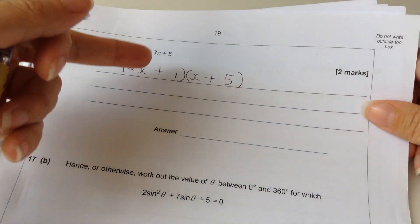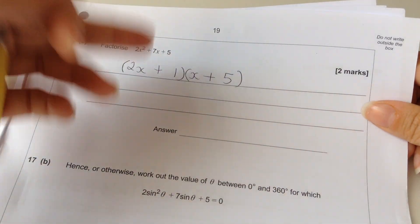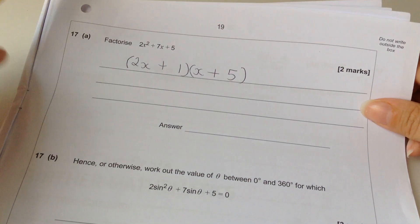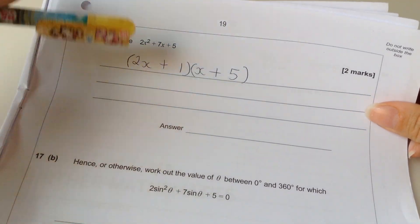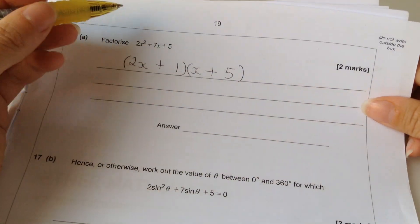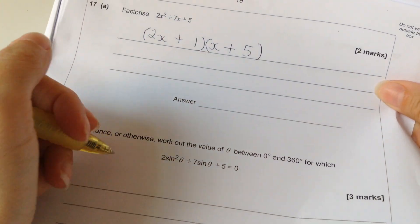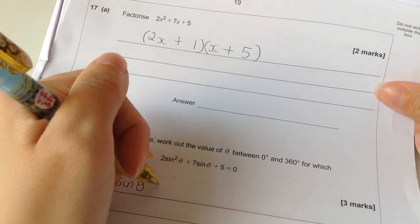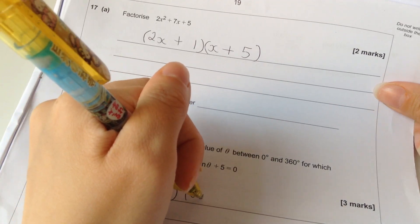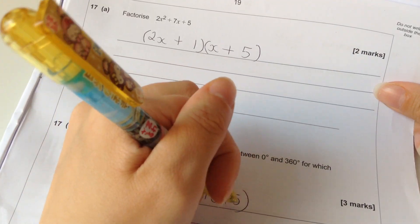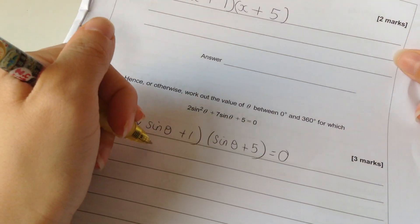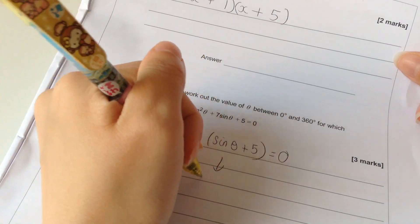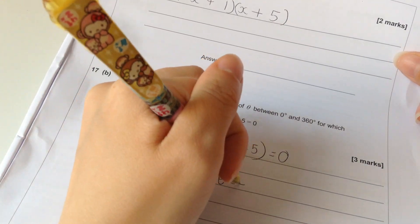Hence or otherwise. You should always use it. If it says hence or otherwise, always use it. Work out the value of theta for which... Okay. Can you see the relationship? Basically the same thing. Instead of x, this is sine. So I'm going to use this simplified version. But instead of x, I'm writing sine.